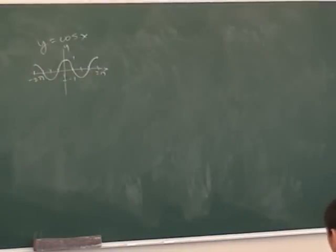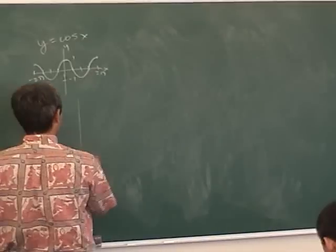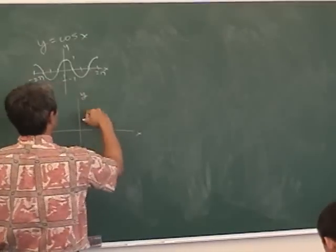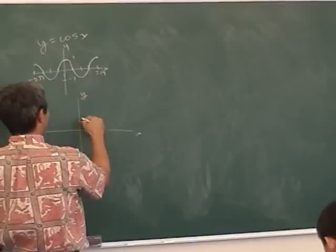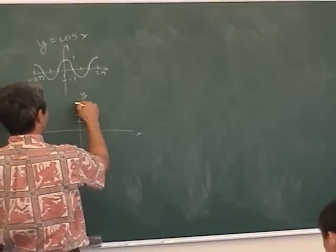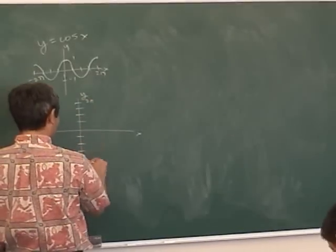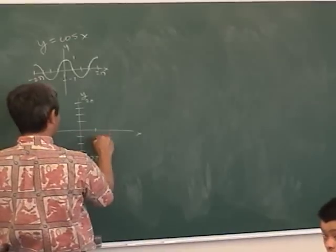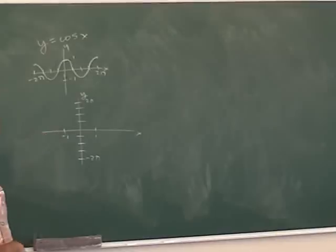Now what if I were to ask you to graph the inverse of this? You switch the x's and y's — that's exactly what you do. We learned how to do this already. On your y-axis, you probably want to label it with the pi's, and on the x-axis you go one and negative one, because you can switch the x's and y's.